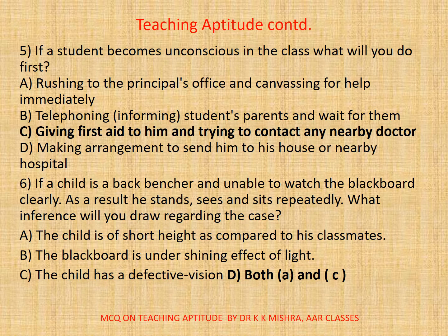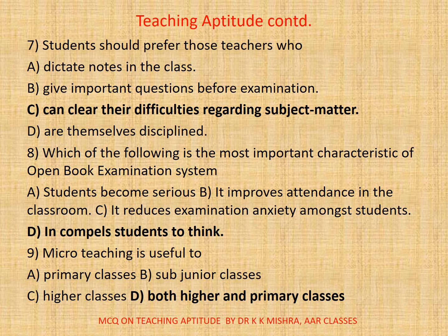Question 6: If a child is a back-bencher and unable to see the blackboard clearly — as a result he stands, sees, and sits repeatedly — what inference will you draw? Correct answer: d) both a and c are correct: a) the child is of short height compared to classmates, and c) the child has defective vision.